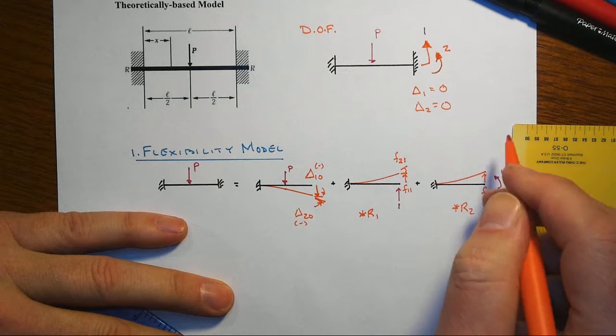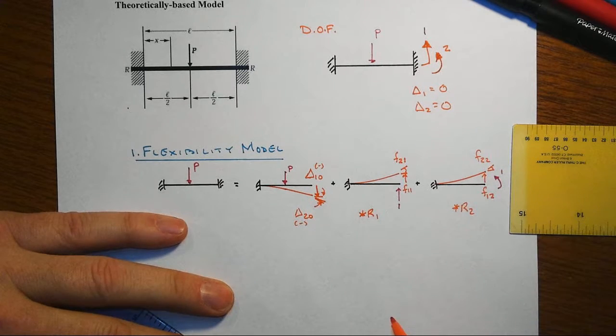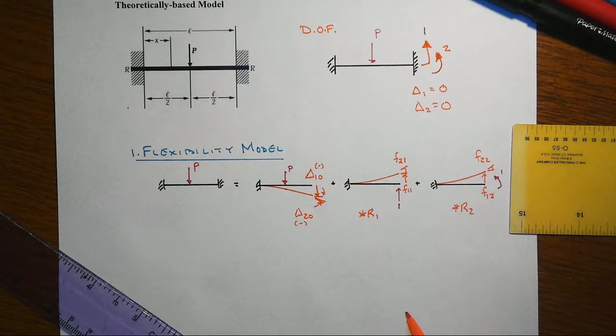F12 is caused by the load at two, and then we get that rotation. There's your F22 at work.